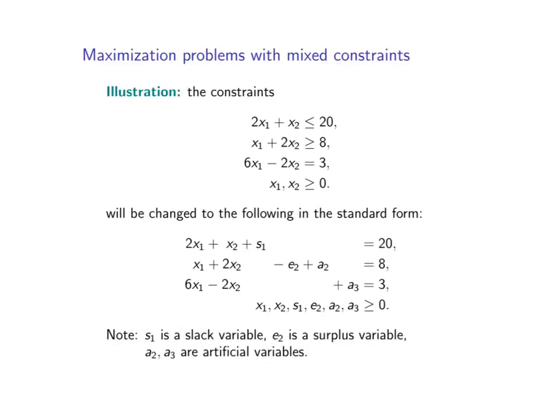We have discussed how to transform constraints to standard form by adding slack variables, surplus variables, and artificial variables appropriately. To summarize: if the constraint involves a less than or equal to symbol, we will add a slack variable to the left-hand side.